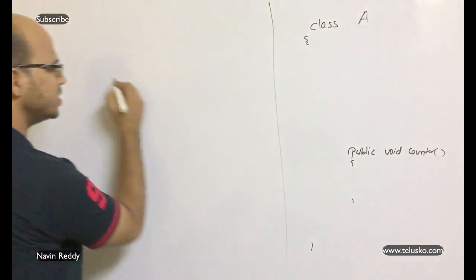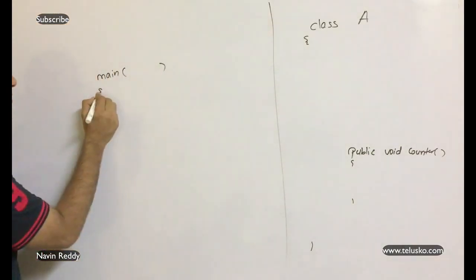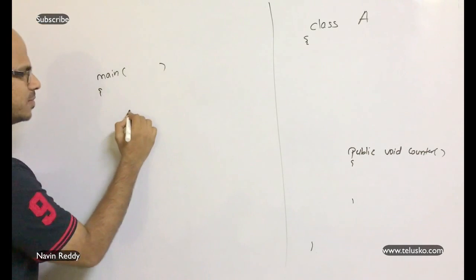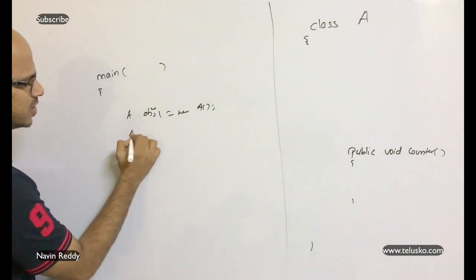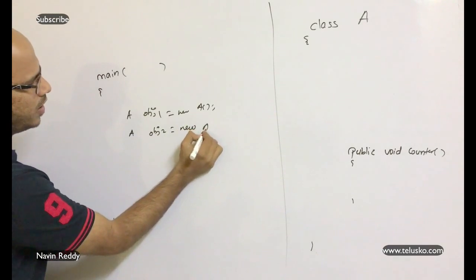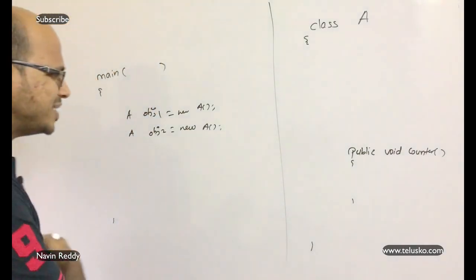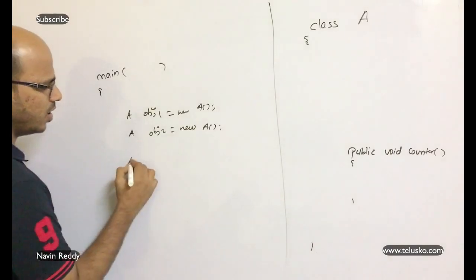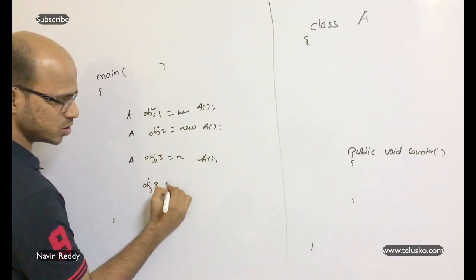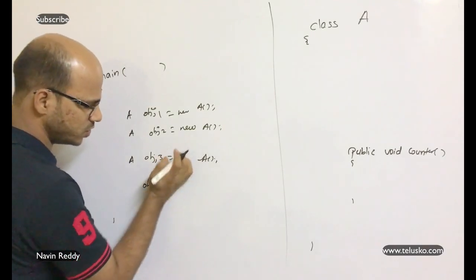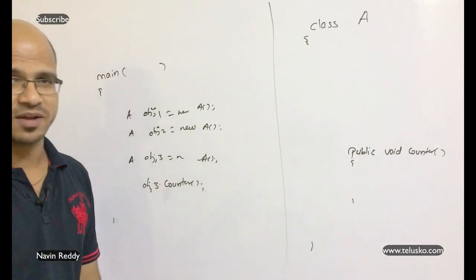So if I create one object of class A, this counter should print 1. If I create two objects, it should print 2. If I create 10 objects, it should print 10. We'll also have a main method here. Inside main, let's create objects: A obj1 = new A, A obj2 = new A, and a third object obj3 = new A. Then if I call obj3.counter, it should print the number of objects created.